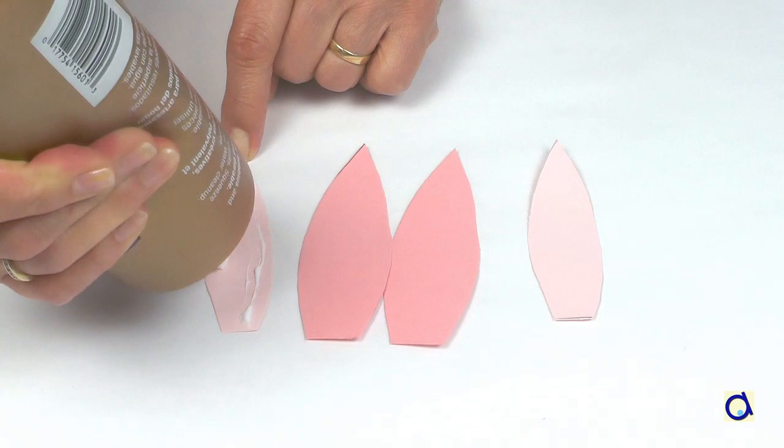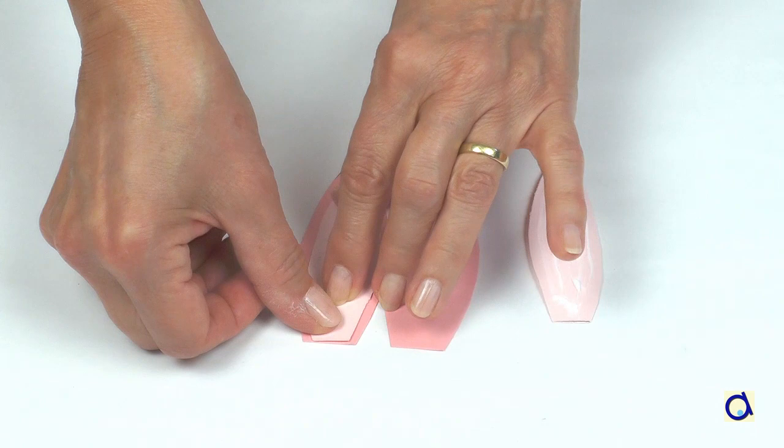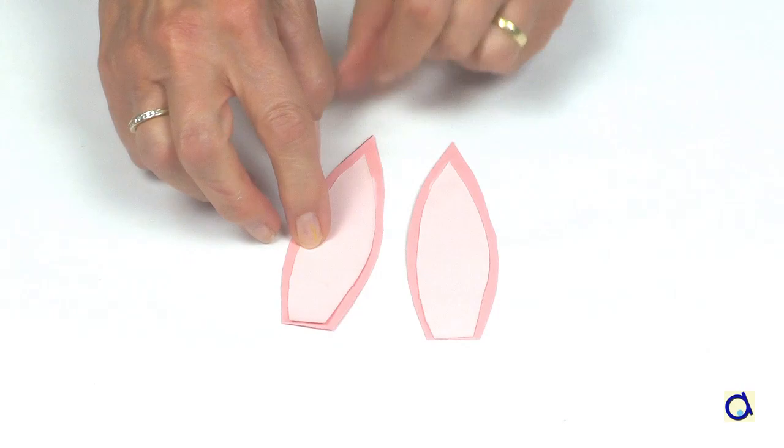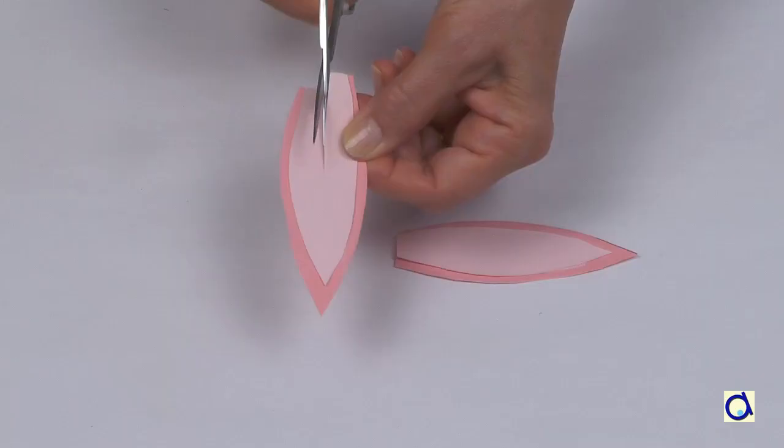Glue the insides of the ears to the ears with white glue. Align the flat sides at the bottom of the ears and centre the inside on the ear.